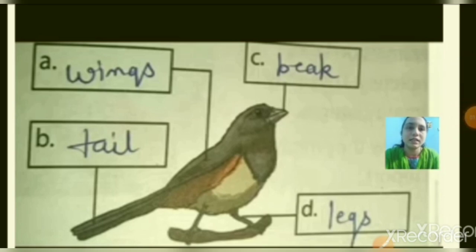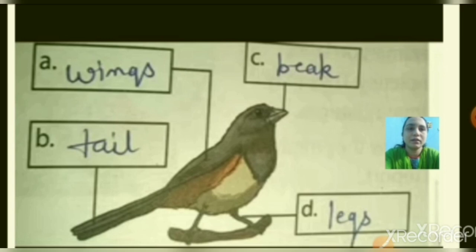This is the picture of a bird. A bird has this shape. You can see the beak, then wings, then tail and legs. These all are the parts of the body of the bird. Now, how do birds fly?